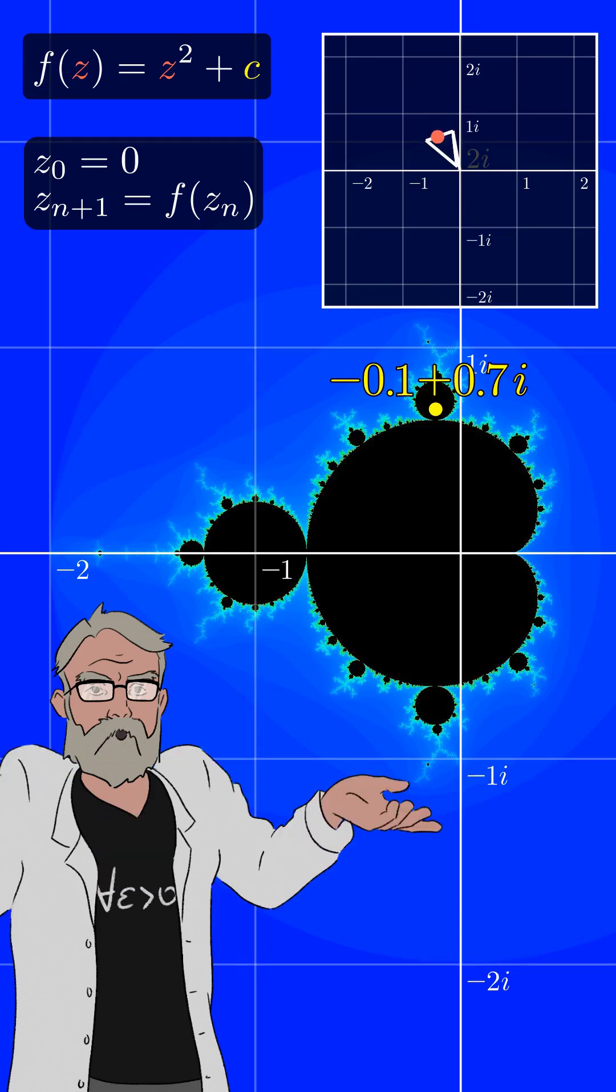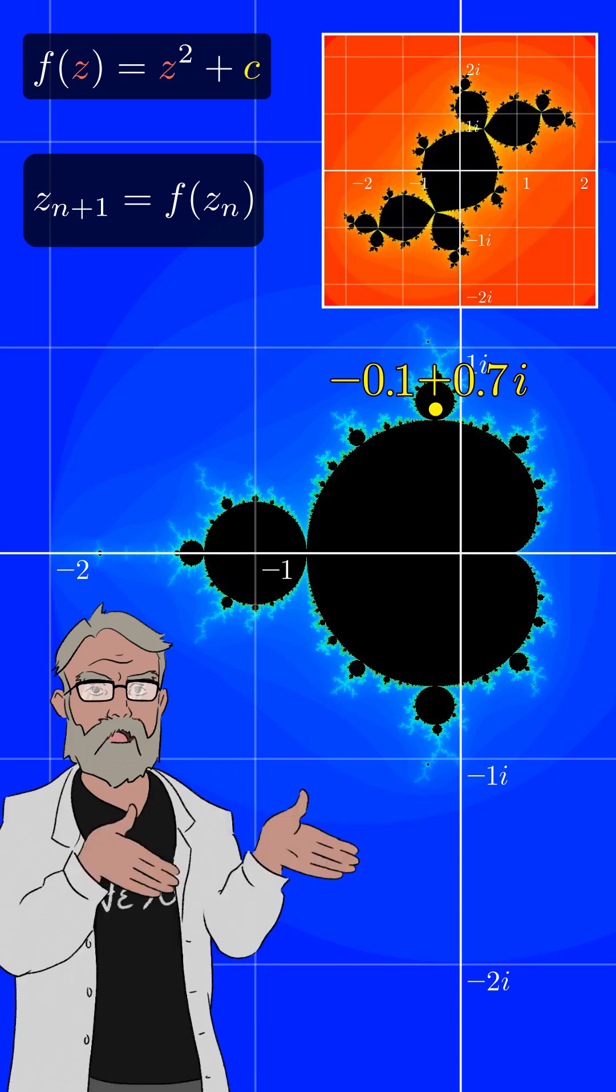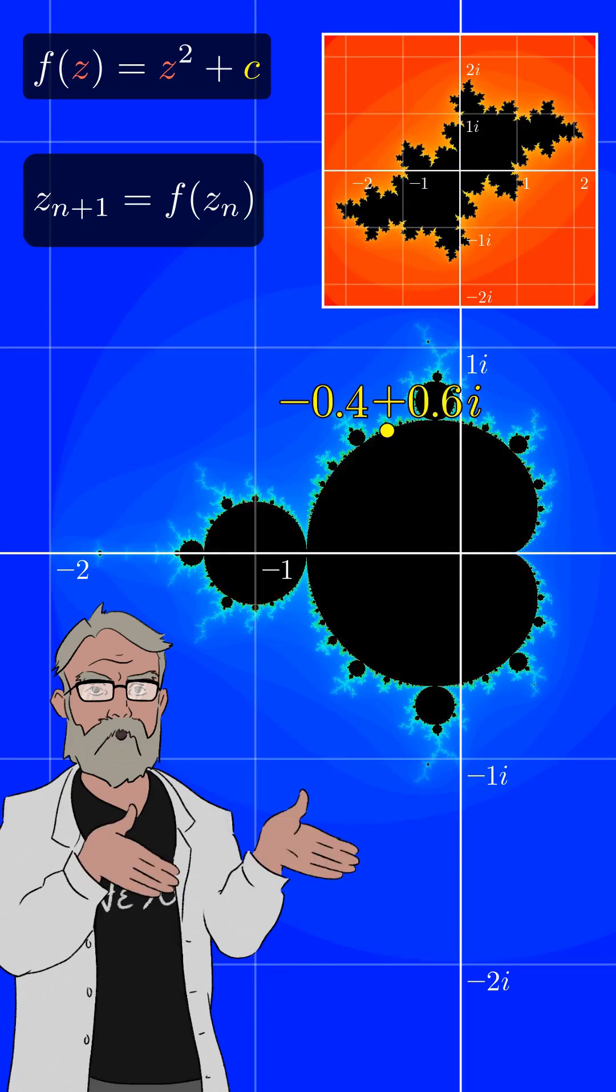But it gets even more fascinating. If we lift the initial condition and colour the points in the same way as the Mandelbrot set, we create something called the filled-in Julia set.